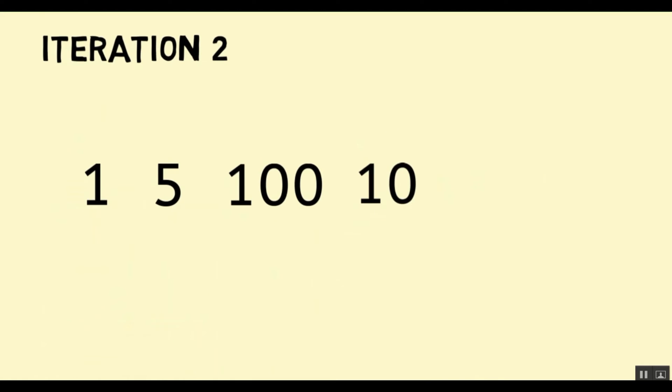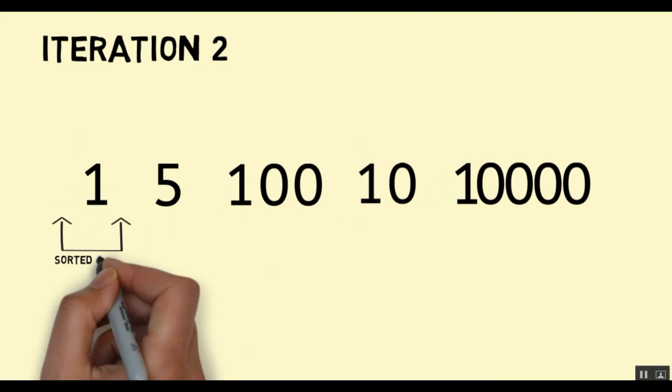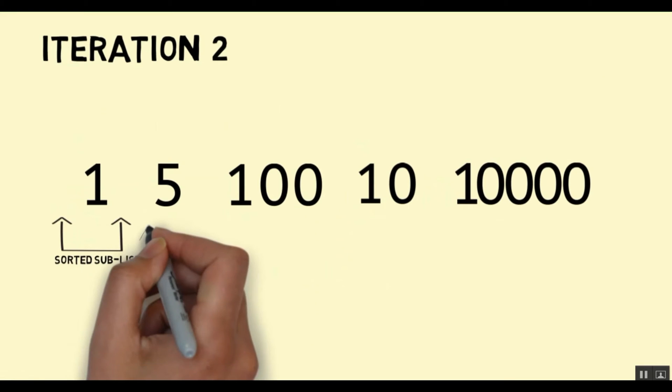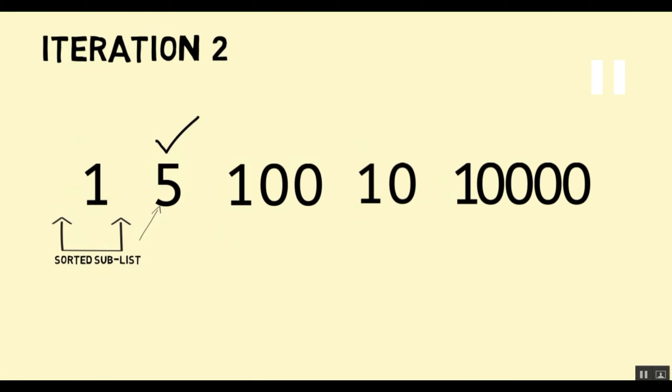1 is now part of the sorted sublist — we no longer need to sort it again. In this iteration, 5 is the smallest number and it is already at the correct position, because the head of the unsorted elements is currently at index 1 where 5 sits. So 5 is marked in place and we have the second element of the sorted sublist. When we move to iteration 3...